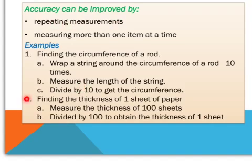Second one, finding the thickness of one sheet of paper. First of all, measure the thickness of one hundred sheets. Then divide it by a hundred to obtain the thickness of one sheet. This is an example of measuring more than one item at a time.